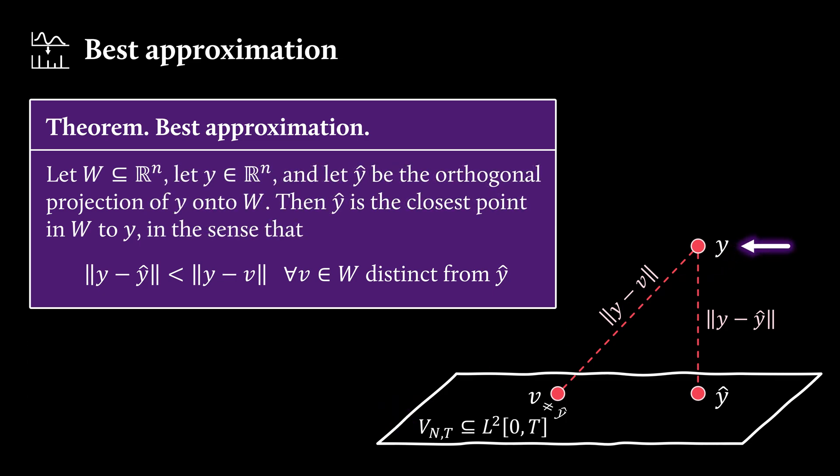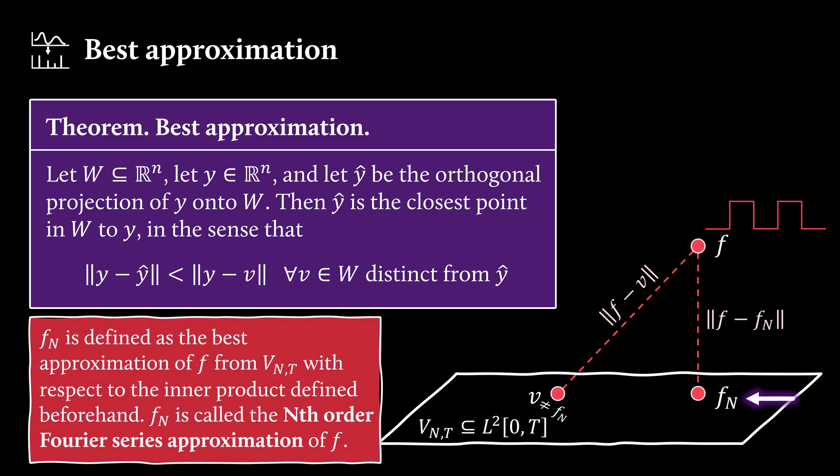And instead of vectors y, we now consider functions f. For example, that might be the square wave function. And instead of y hat, we use fₙ that we've just defined, which is the best approximation of f.